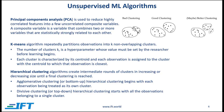Changing gears now and talking about unsupervised machine learning algorithms. One such algorithm is principal component analysis, or PCA. This is used to reduce highly correlated features into a few uncorrelated composite variables. A composite variable is a variable that combines two or more variables that are statistically strongly related to each other.